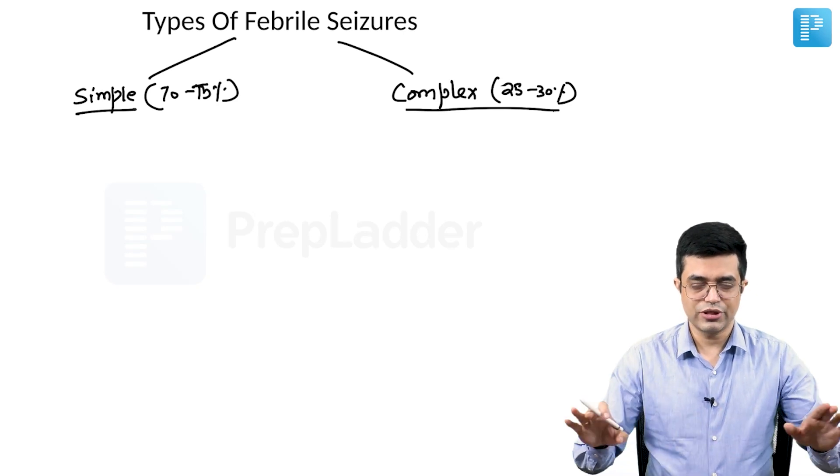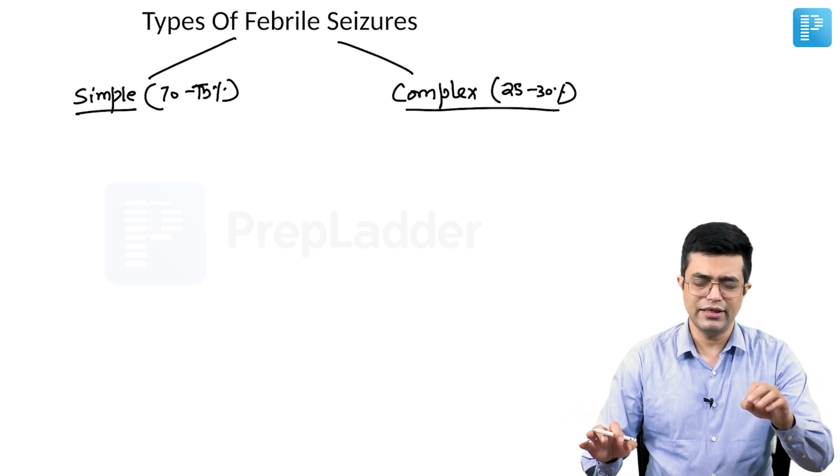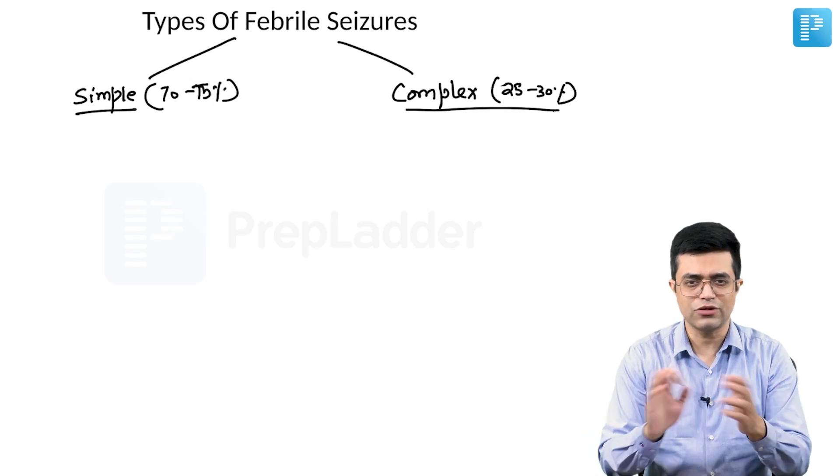These are the percentage distributions in the population. In a single child it is usually either simple or complex, not a mix of the two.